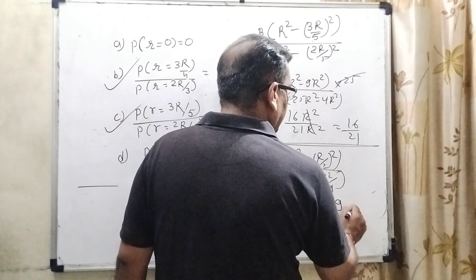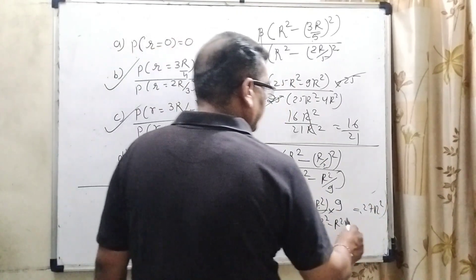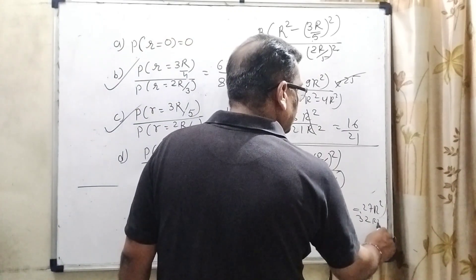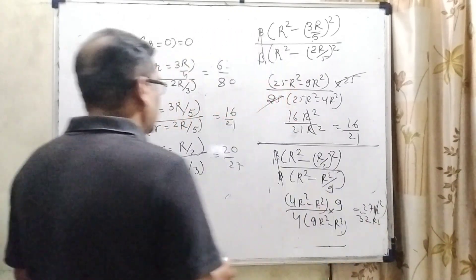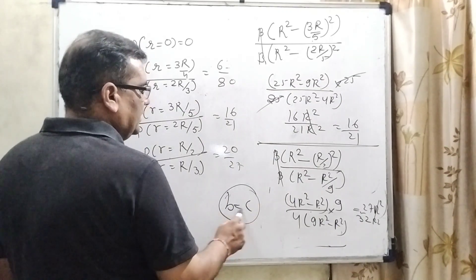3 r square and 9, 27 r square, and this is 8 times 4, 32 r square. So here this answer is not possible. So only B and C are the correct answers. I hope you understood this problem.